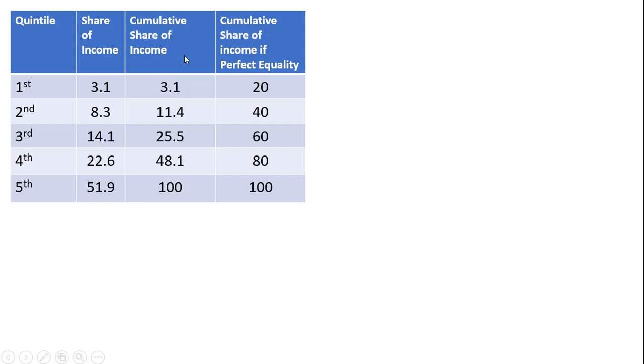Starting with the bottom 20%, they're earning 3.1% of all aggregate income. The bottom 40%, I took 3.1% and added to it 8.3%, so the bottom 40% are earning 11.4% of the share of aggregate income.